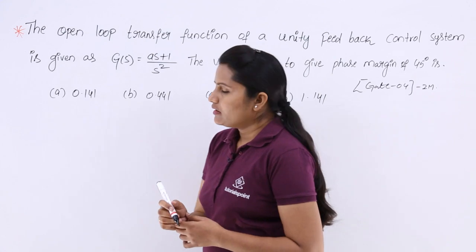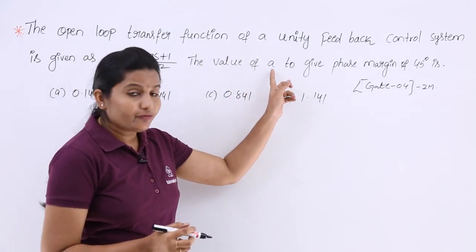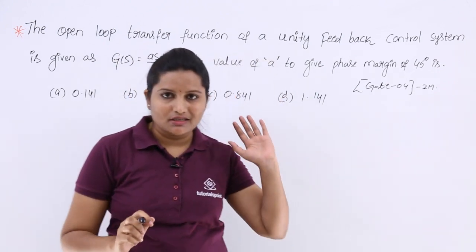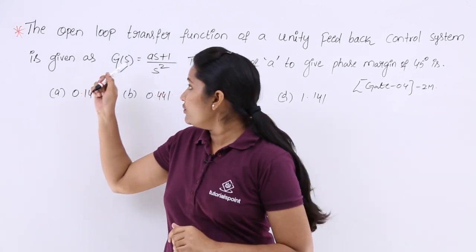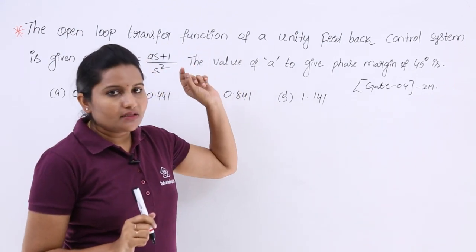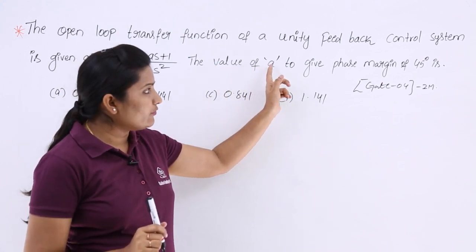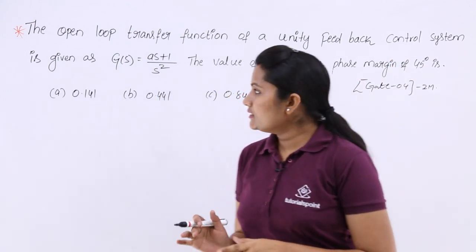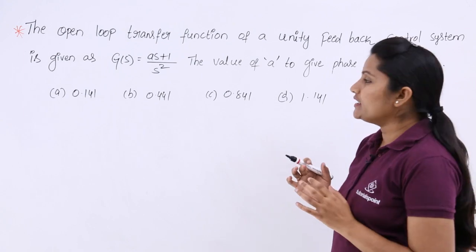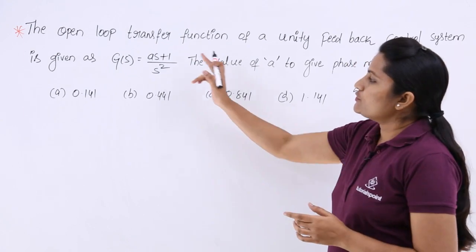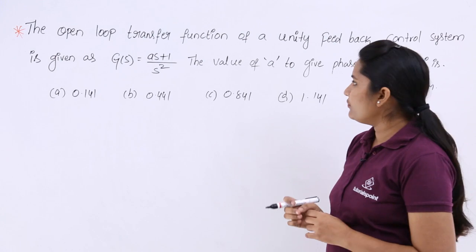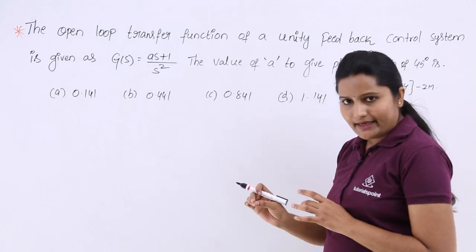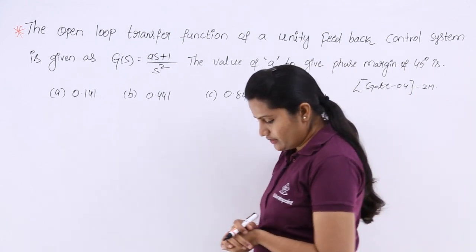We need to find the value of 'a' in the transfer function. The value of 'a' to give a phase margin of 45 degrees. So here they've given the transfer function of a unity feedback control system, and we need to find out the value of 'a' which gives a phase margin of 45 degrees.